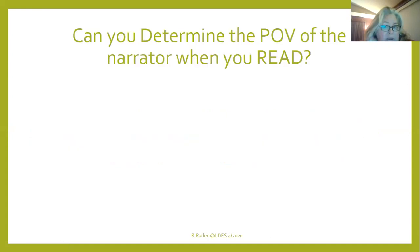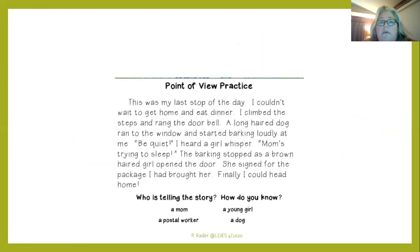So how can you determine the point of view of the narrator when you read? Let's read this: 'This was my last stop of the day. I couldn't wait to get home and eat dinner. I climbed the steps and rang the doorbell. A long-haired dog ran to the window and started barking loudly at me. Be quiet, I heard a girl whisper, Mom's trying to sleep. The barking stopped as a brown-haired girl opened the door. She signed for the package I had brought her. Finally I could head home.'